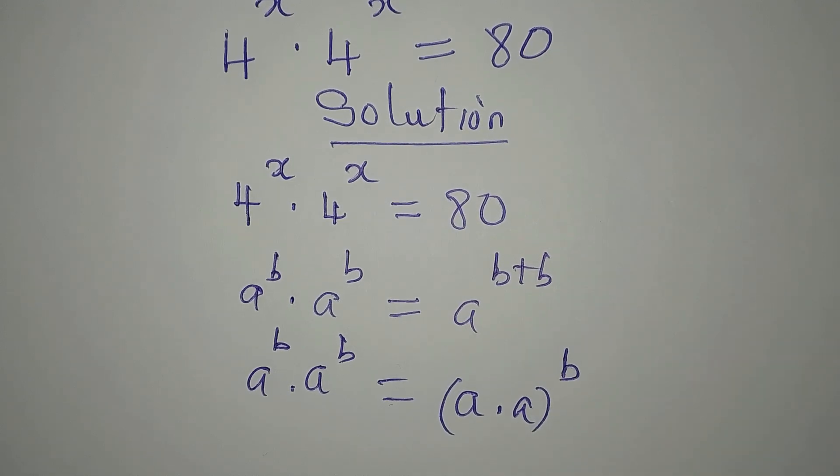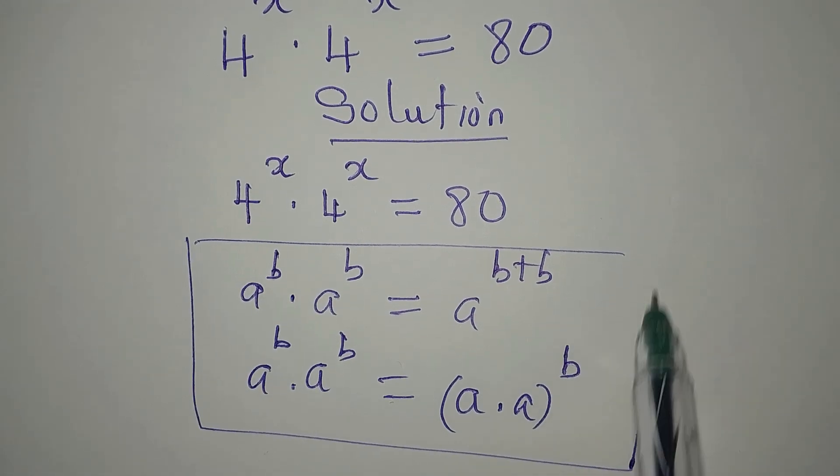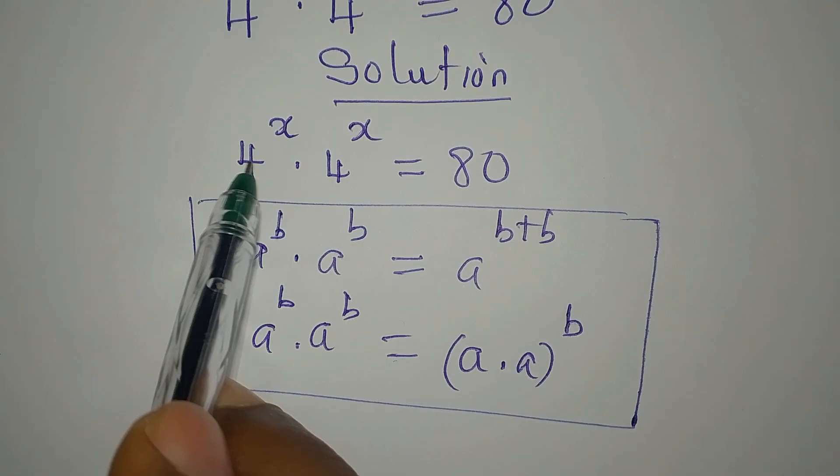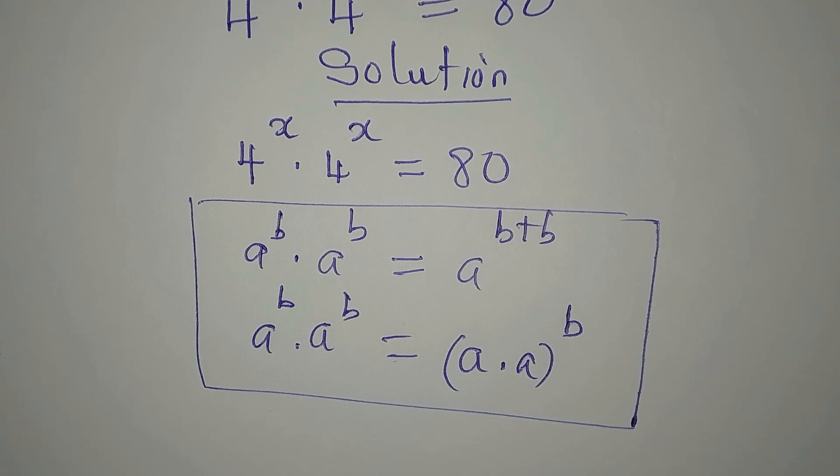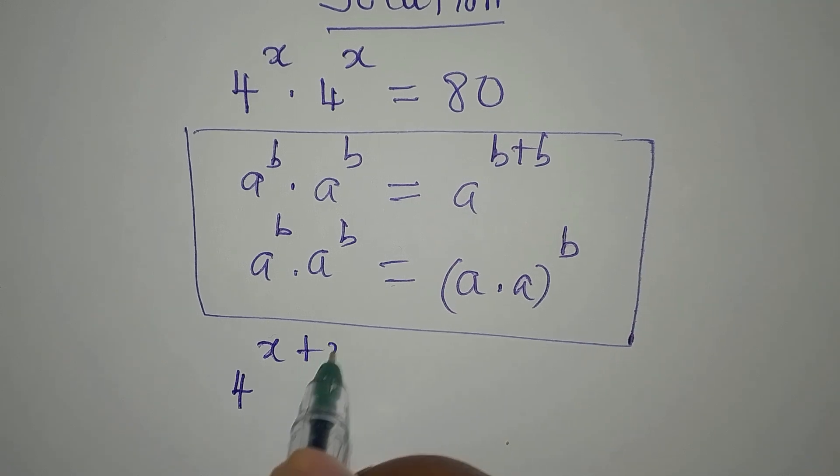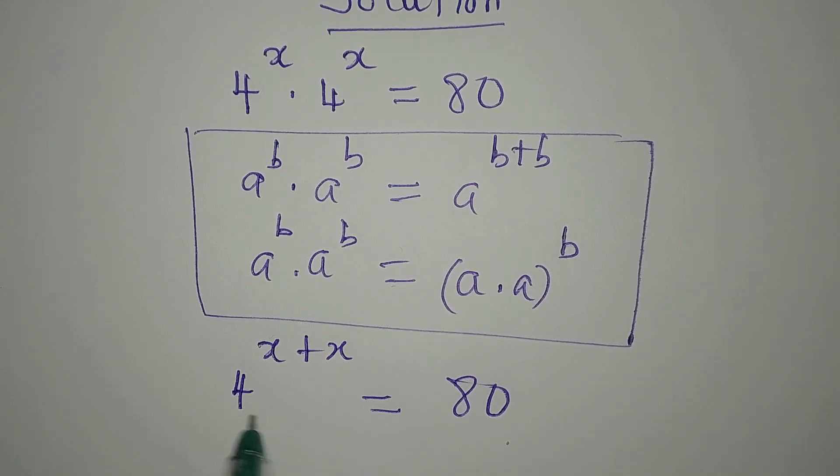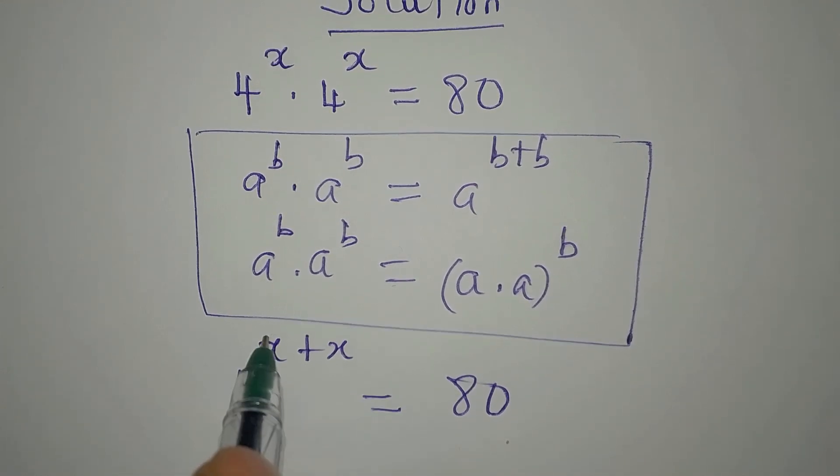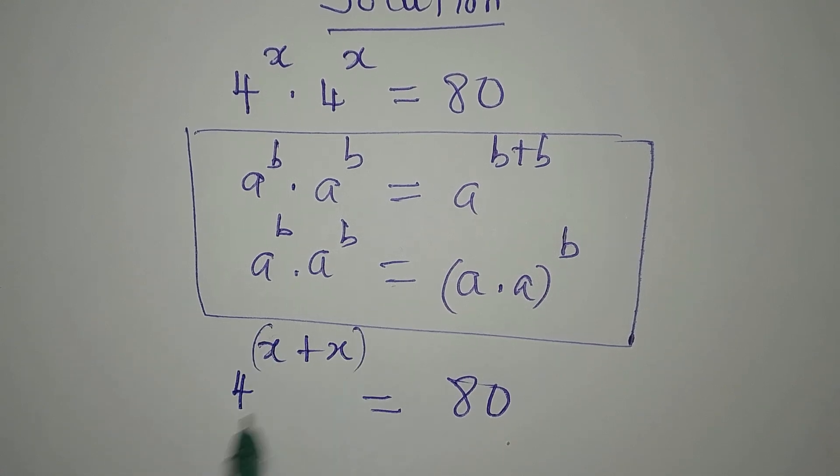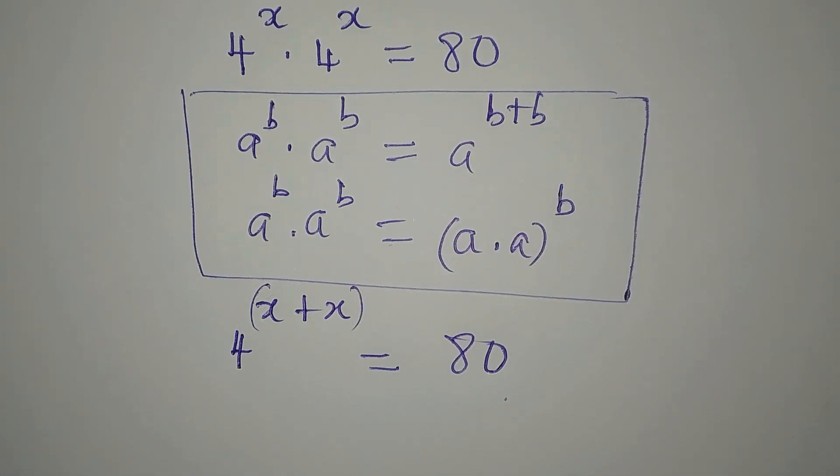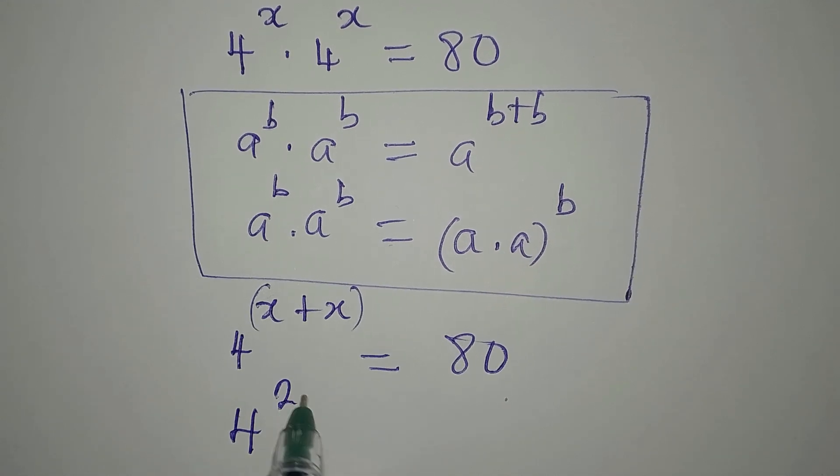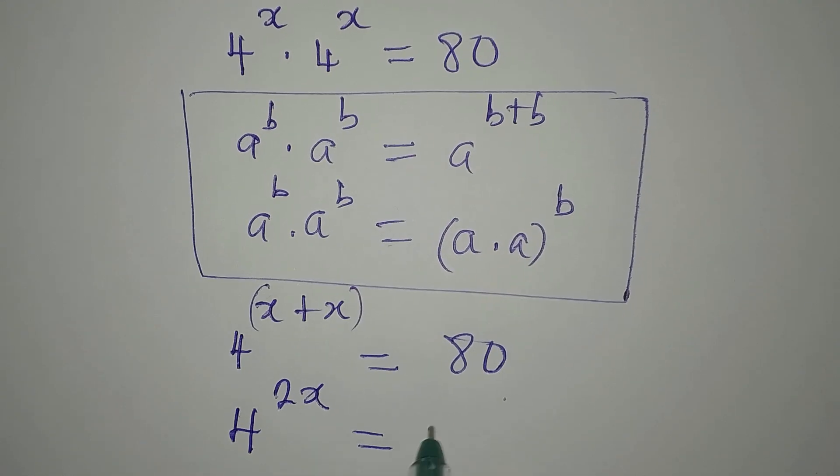So both of them here are the same thing. So now let's continue to the problem that we have. I would like to write that as 4 to the power of x plus x equals 80. But you cannot divide both sides by 4 because this 4 is attached to this power. So to take another step, we have 4 to the power of 2x equals 80.